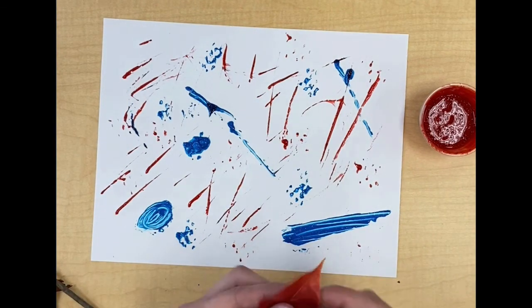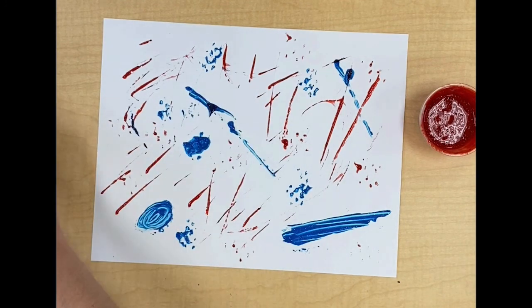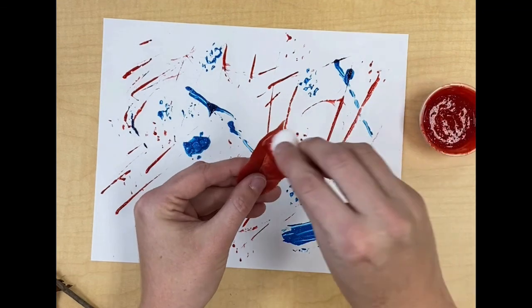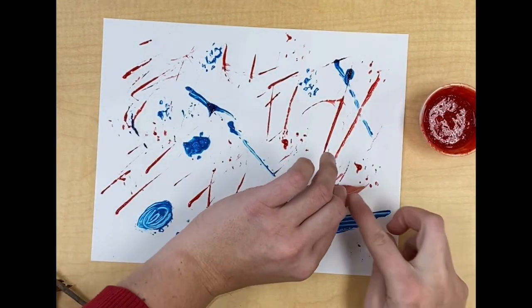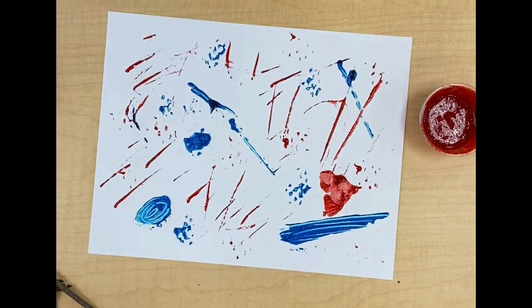I was thinking maybe I could use my leaf as a stamp. I'm going to try it. Try to put some paint right on my leaf on the tip of it and we'll see what happens. Put it right there. Oh it worked. Cool.